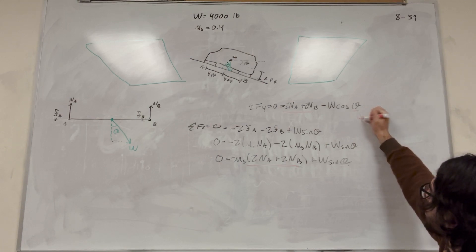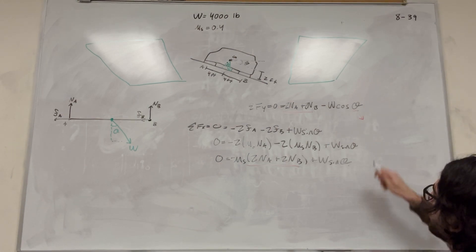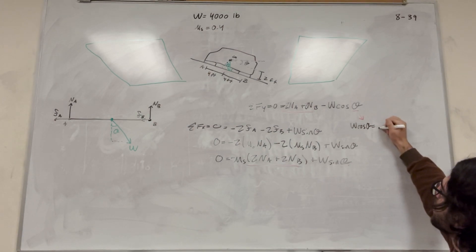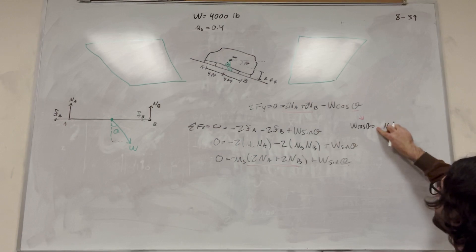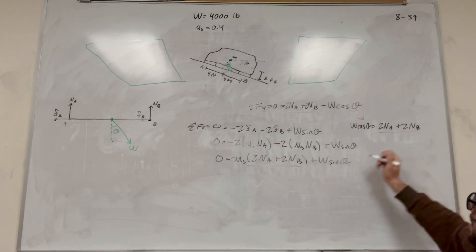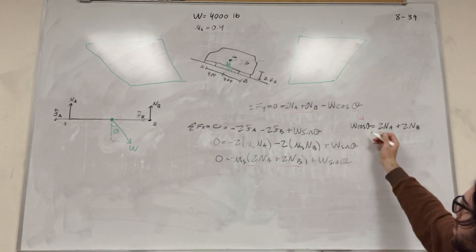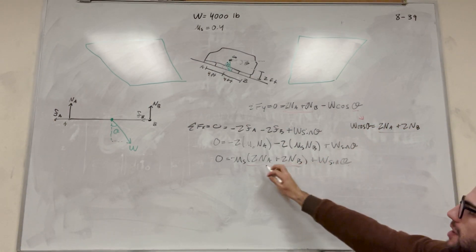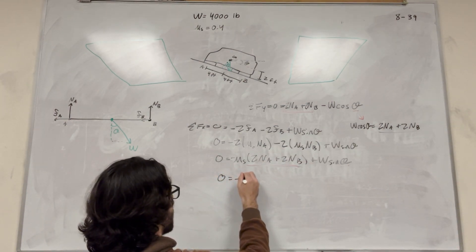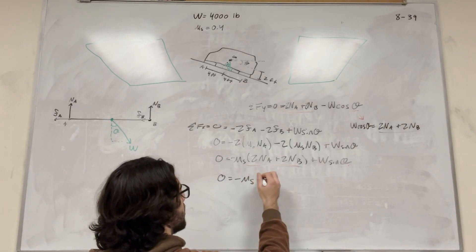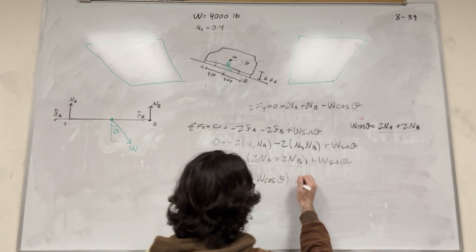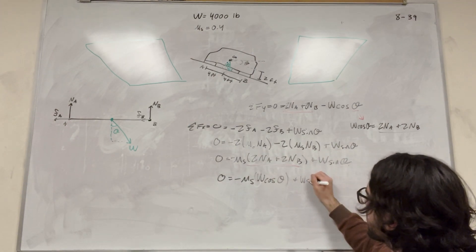So if we rearrange this equation just by moving the W cosine over, so W cosine of theta is equal to two normal at A plus two normal at B. So we have this two normal at A plus two normal at B, and we have it here too. So all we have to do is plug in W cosine of theta for this two normal at A plus two normal at B. So you're going to get that zero is equal to negative coefficient of static friction, W cosine of theta. That's just what went in here.